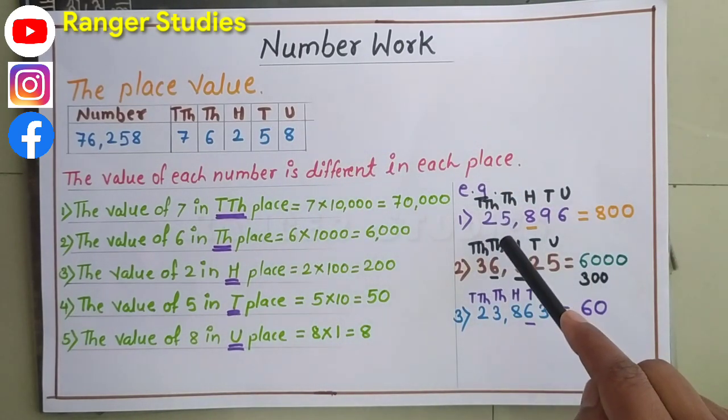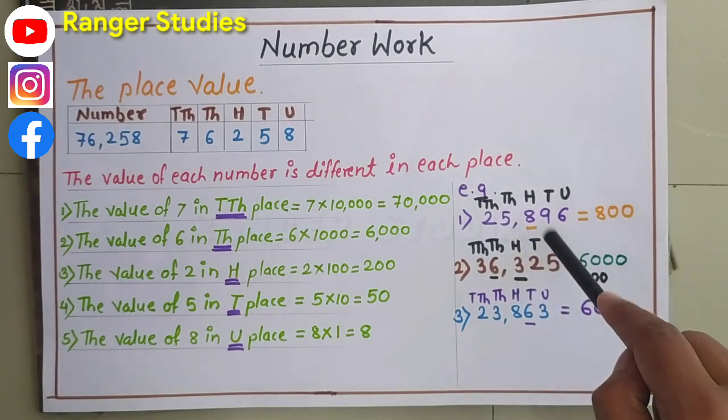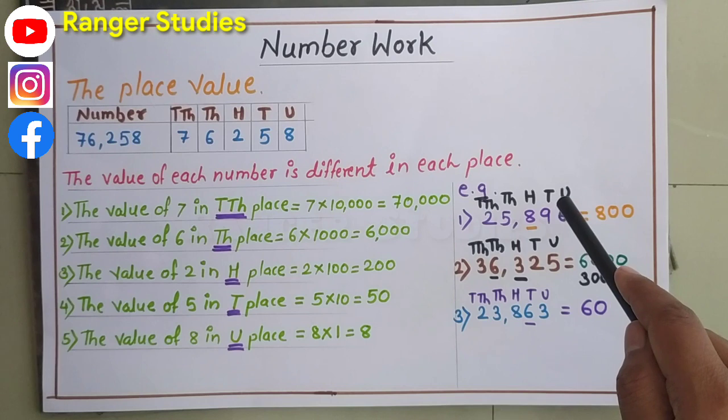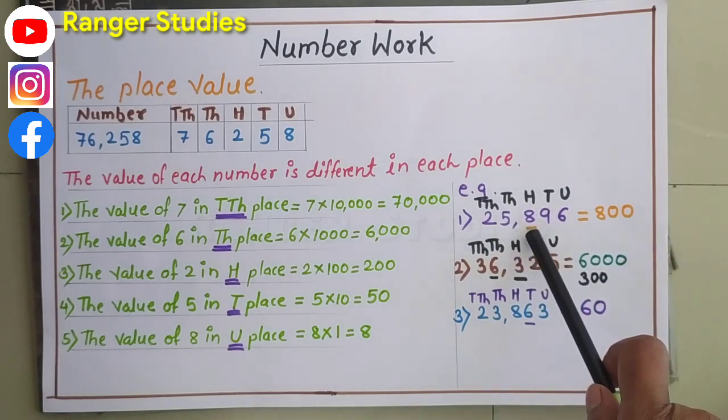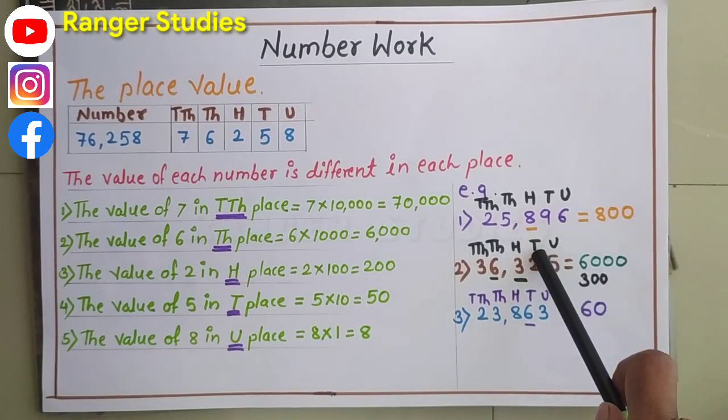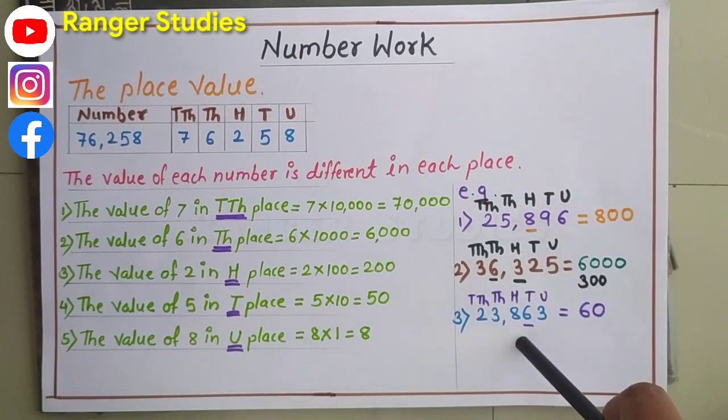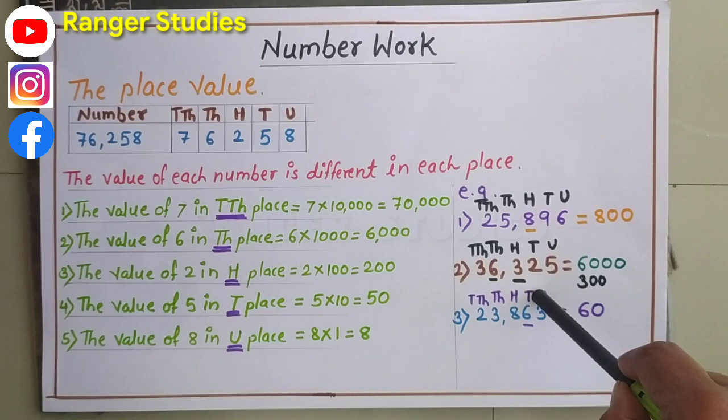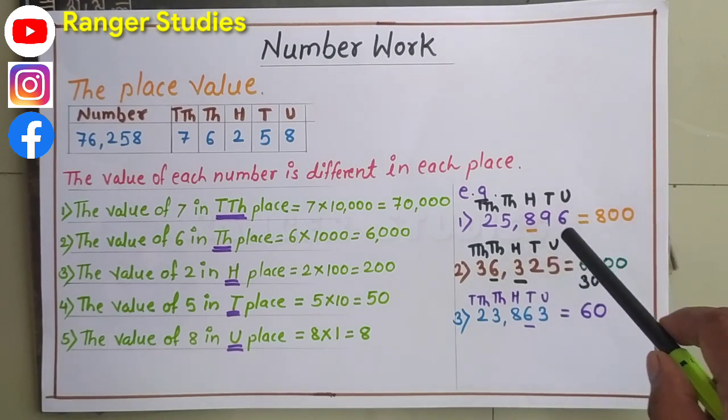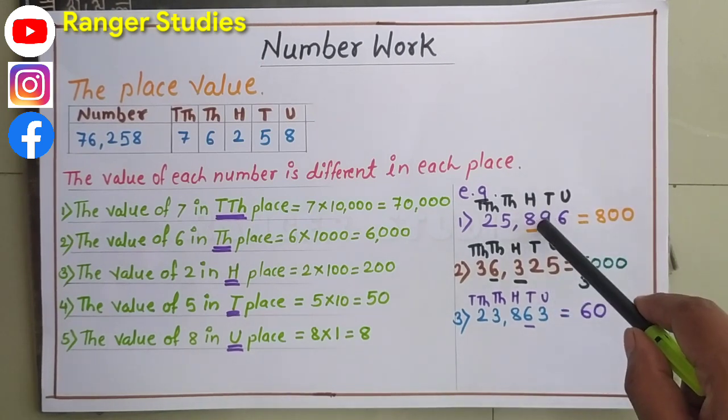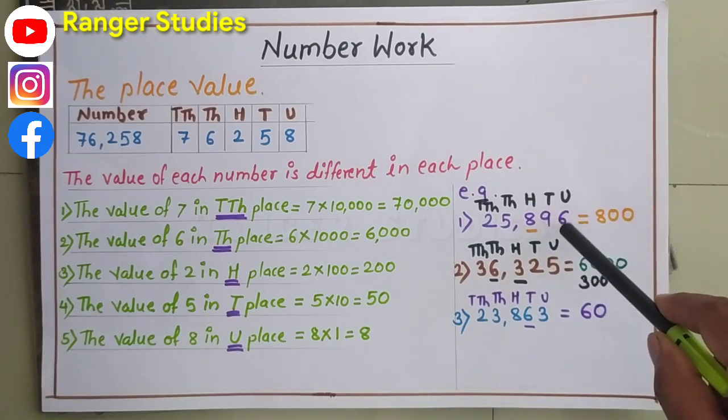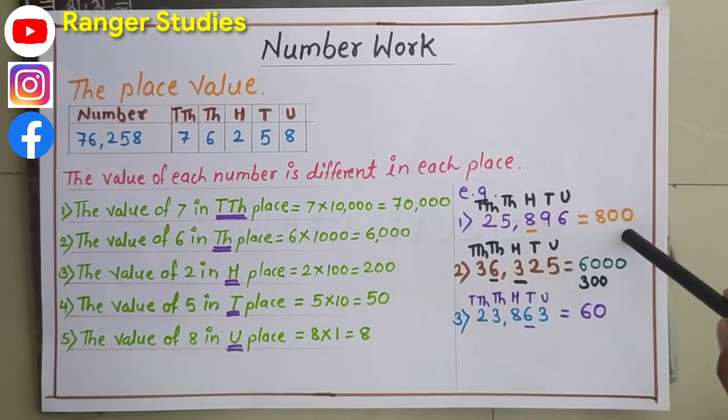Let's see an example. If they are giving any example, we can write the place value of any digit. So, 25,896. Here the underlined number is 8. What is the place of that 8? Yes, hundred. So how can we write place value of 8? We can write 8 multiplied by 100, which means 800.